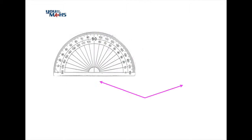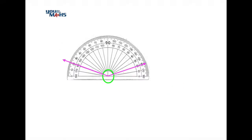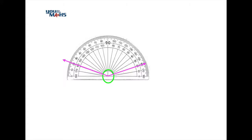We'll have a look at how to measure an obtuse angle now. The first thing we'll do is take the base of the protractor so that its center is matching the vertex of the angle. Once we've done that, we rotate our protractor so that the base where the 0 degrees is matches one of the rays of the angle. We've slightly rotated our protractor to the right so one ray coincides with 0 on the protractor.